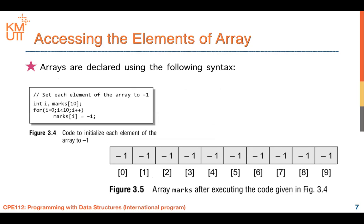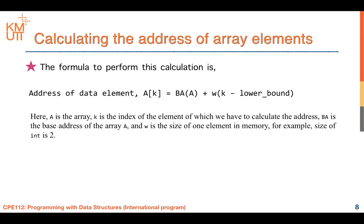The next slide is about how to access elements of an array. Arrays are declared using the following syntax. If you declare integer marks[10] and want to assign minus one to each element, you can use a for-loop from i equals zero to ten, then set marks[i] equal to minus one. This initializes every element in the array to minus one.